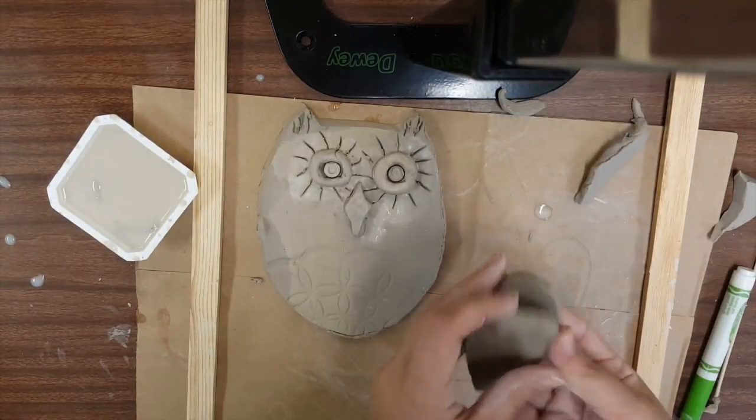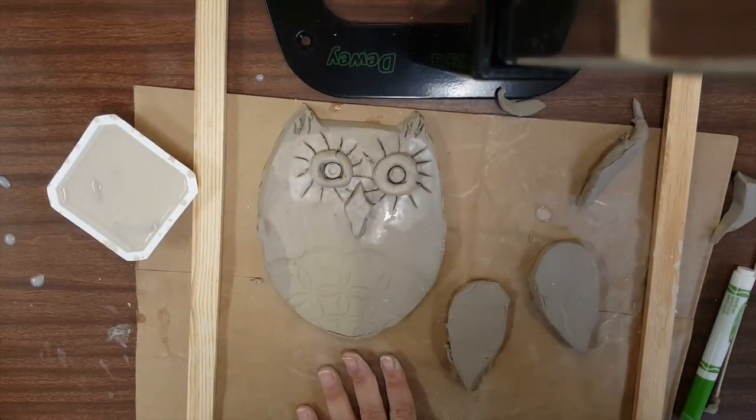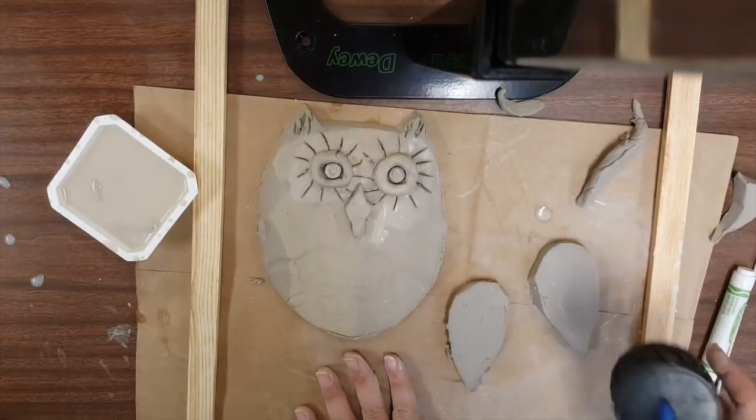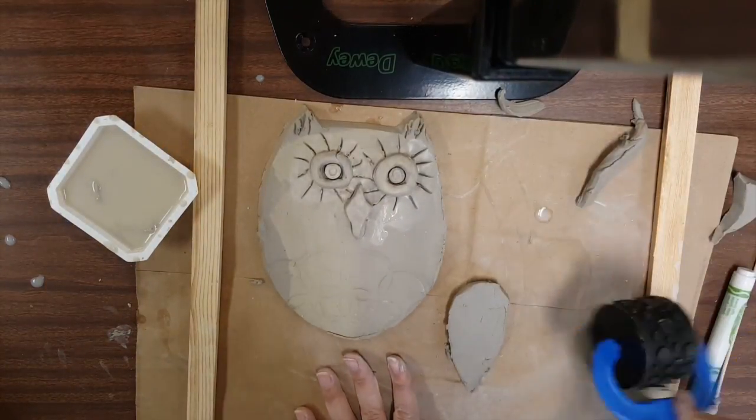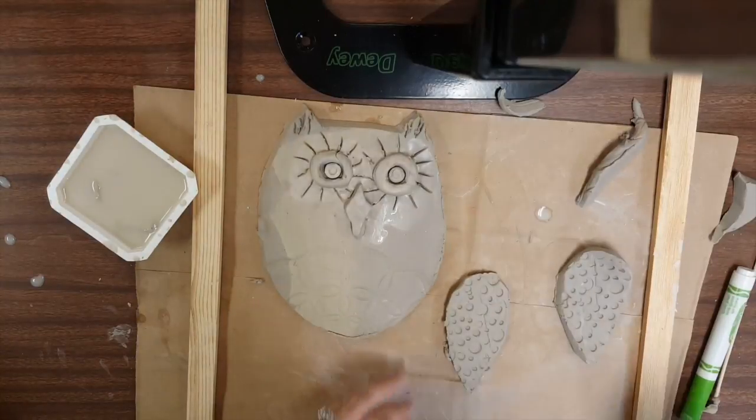And because I made slabs, they're all the same thickness as the owl. I'm going to want to add a texture to my wings. Again, looking in my basket, I have this cool rolling tool. I'm going to use that and add this polka dot texture.